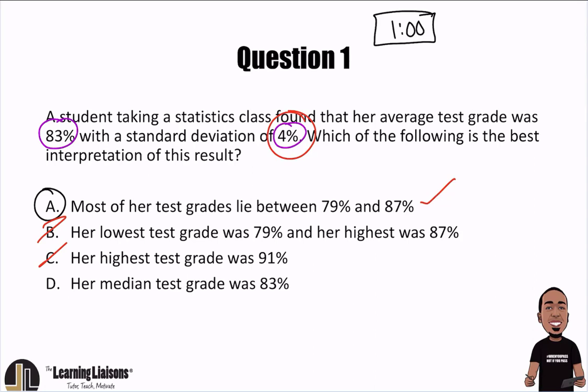Her median test grade was 83%. No, that's not true either. That would only be true if they told us that the median was 83, or if we were given all of the test scores so that we could compute it ourselves. So B, C, and D automatically wrong. You can always cross out answers that indicate highest and lowest when it comes to standard deviation, because standard deviation won't tell you the highest or lowest. It'll just tell you where most of your data is.